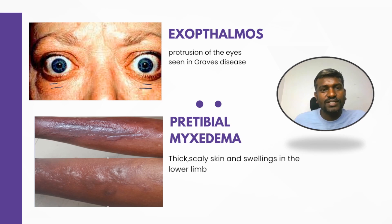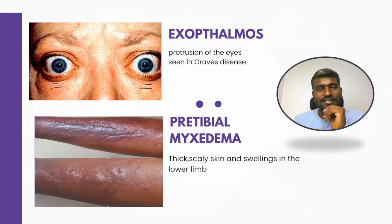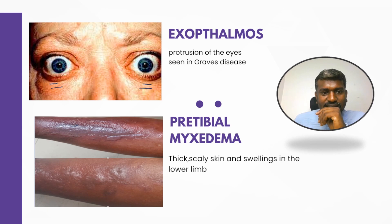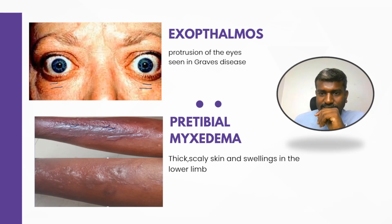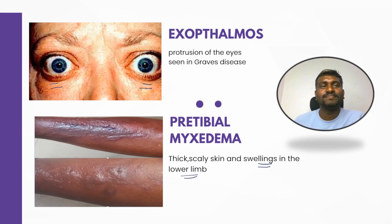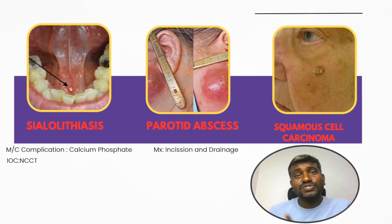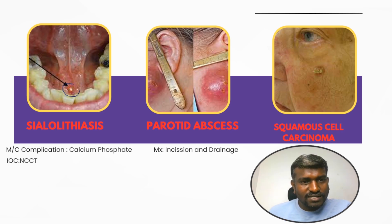Look at the image here — this is exophthalmos; both eyes are protruded and this is commonly seen in Graves disease. The second image is pretibial myxedema — we can see thick scaly skin and the patient is going to have swellings in the lower limb.